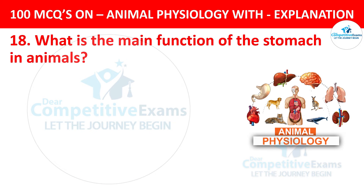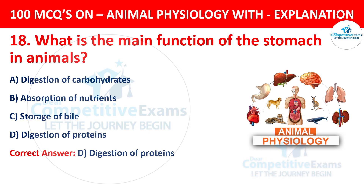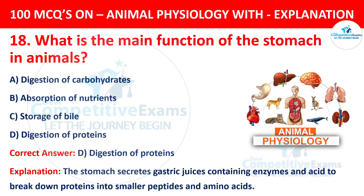Question number 18. What is the main function of the stomach in animals? The options are digestion of carbohydrates, absorption of nutrients, storage of bile, or digestion of proteins. The correct answer is D, digestion of proteins. The stomach secretes gastric juices containing enzymes and acid to break down proteins into smaller peptides and amino acids.